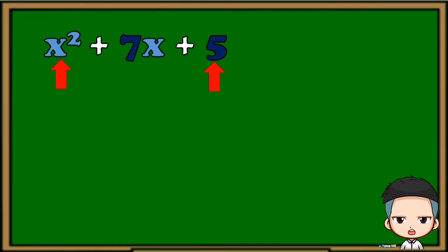Let's have another example: x squared plus 7x plus 5. Are the first term and last term both perfect squares? No — meaning this is not a perfect square trinomial.